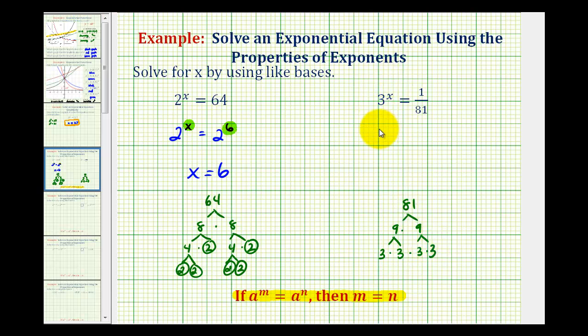So we could write this as 3 to the power of x equals 1 over 3 to the power of 4. Now we can use our properties of exponents and move this up into the numerator.